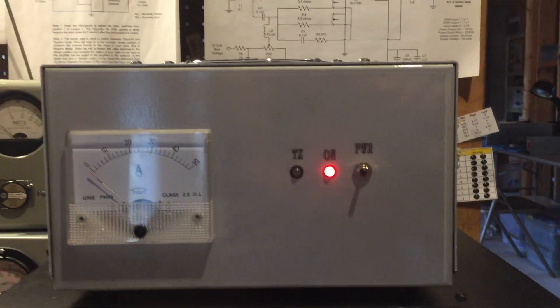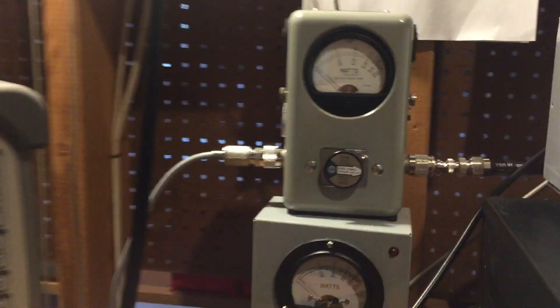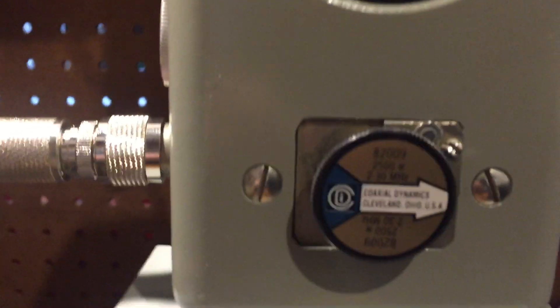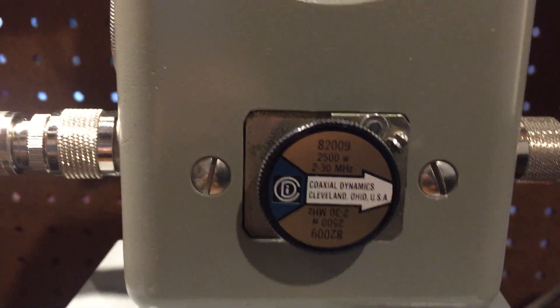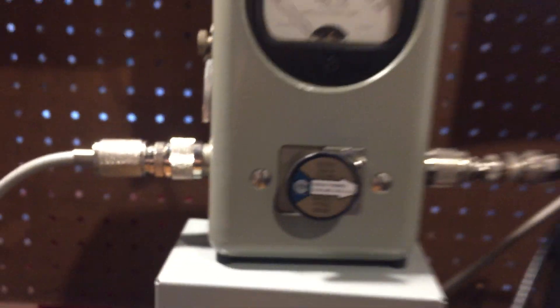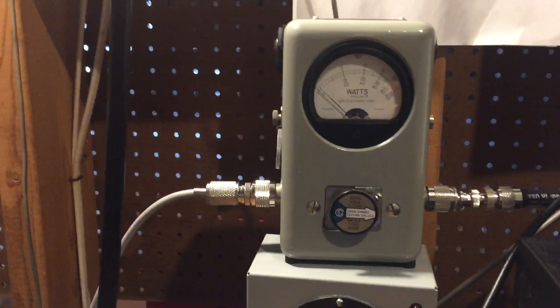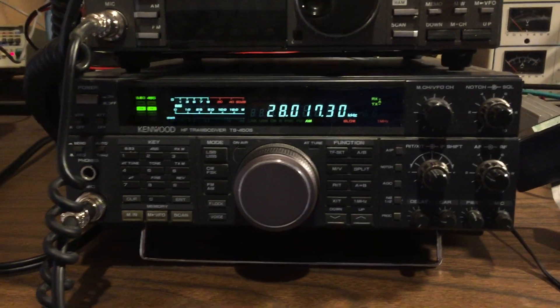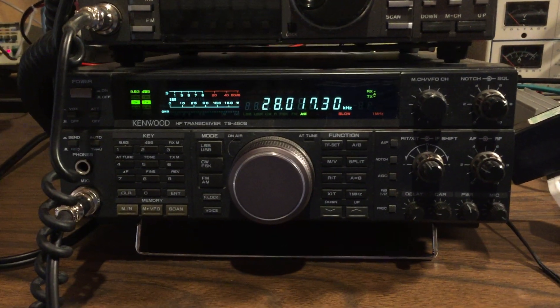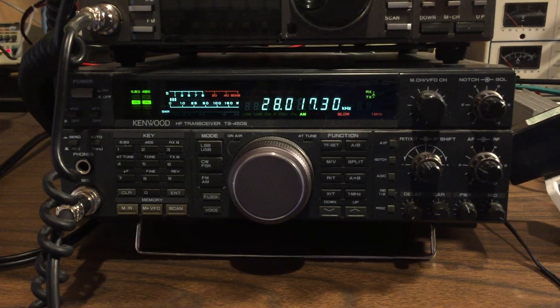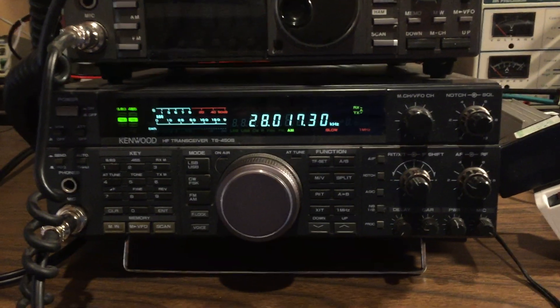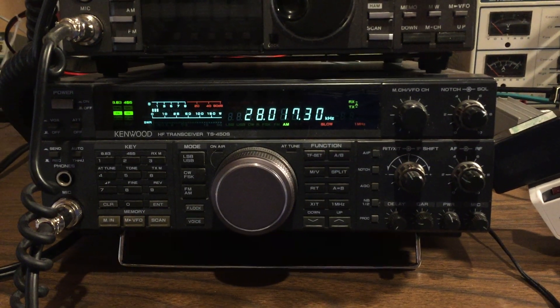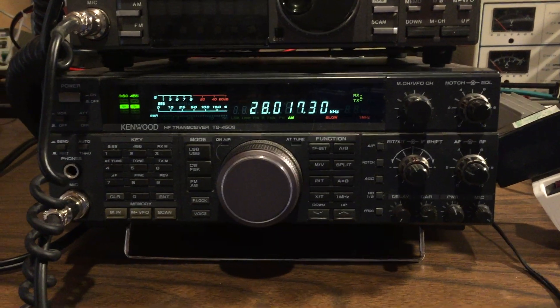So here you see the amplifier set up. Here's my bird watt meter, I'm using a 2500 watt slug as you can see there, and I'll be driving this with my Kenwood transceiver. You can see I'm on 28 megahertz there and we'll demonstrate this in AM and also sideband. So let's start with AM.